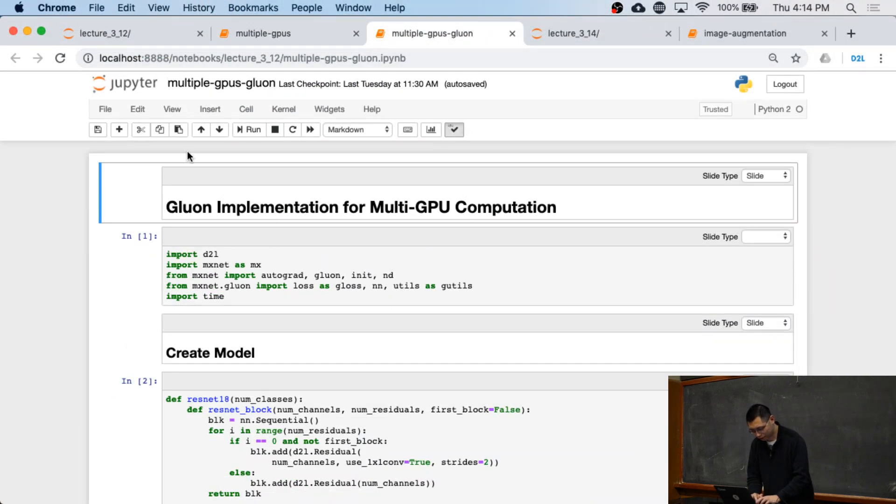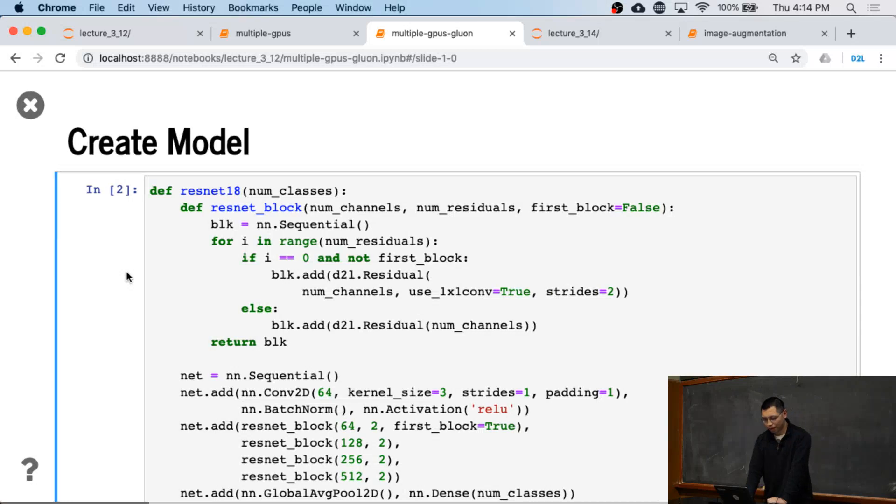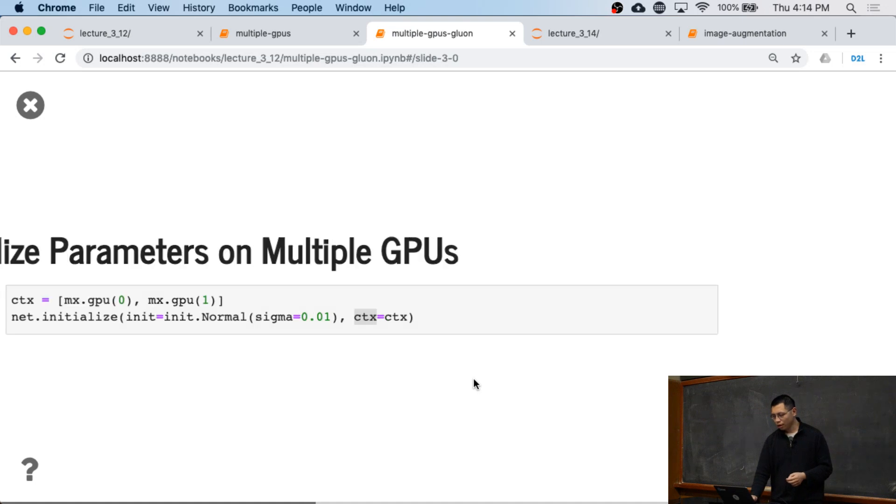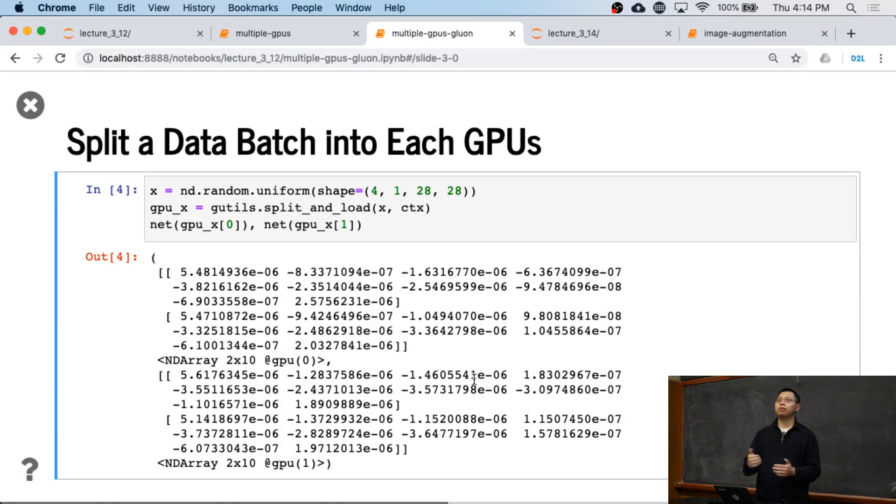Let's show how to using Gluon. Pretty similar. The only thing different here, we're going to use ResNet as an example because neural net is too small. You can ignore how to do in ResNet. I think you already got how to do that. And also we're using two GPUs here. The only thing here, when you initialize the parameters, I can specify a list of GPUs. So Gluon will do it automatically for you. So no matter it's just a single context or list the context, we're going to do that. So if we just initialize on multiple contexts, we're going to copy the parameters into multiple GPUs.